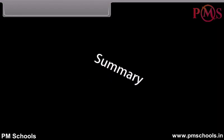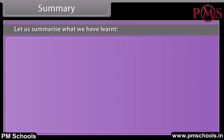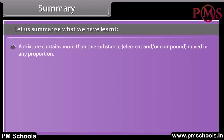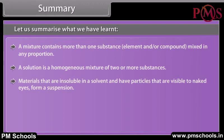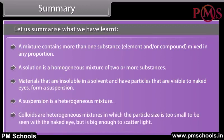Summary: A mixture contains more than one substance — element or compound — mixed in any proportion. A solution is a homogeneous mixture of two or more substances. Materials that are insoluble in a solvent and have particles visible to the naked eye form a suspension; a suspension is a heterogeneous mixture. Colloids are heterogeneous mixtures in which the particle size is too small to be seen with the naked eye but big enough to scatter light.